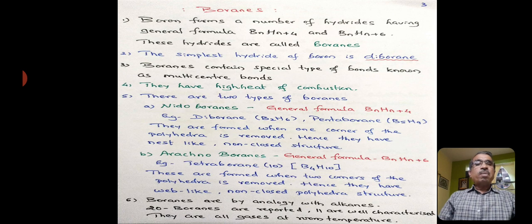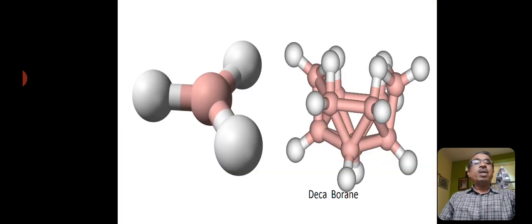Boranes are by analogy with alkanes. 20 boranes are reported, 11 are well characterized, and they are all gases at room temperature. Here, I have shown the first one is a BH3 molecule, which is unstable. These BH3 units combine and form tetraborane, which I have shown in this diagram.